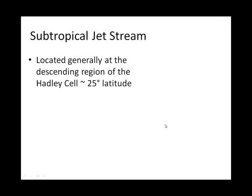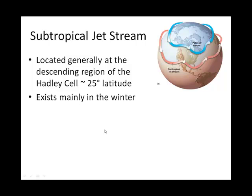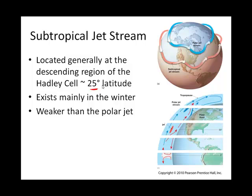The subtropical jet stream is not as important to us, but in the summertime it can actually be a player in bringing warm, moist air to us. It's generally located where the Hadley and Ferrell cells meet, about 30 degrees latitude — it says 25 degrees, but remember that wanders. It's generally weaker than the polar jet stream. And here's the subtropical jet right there.